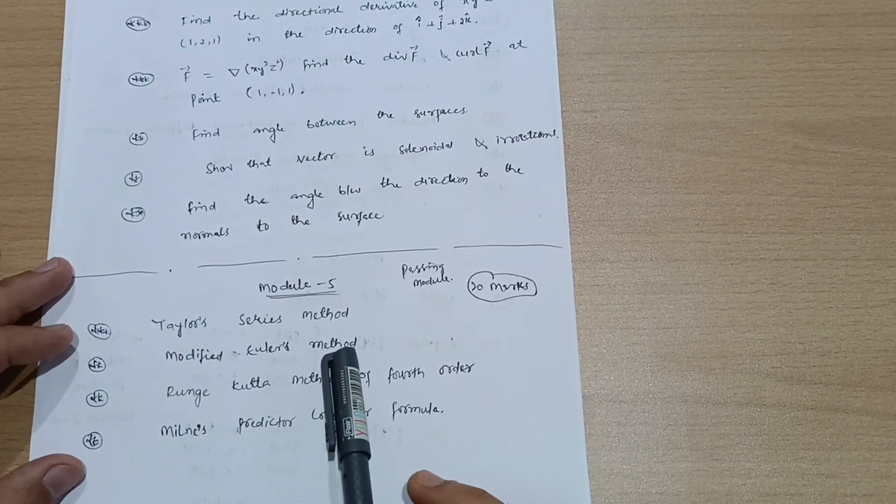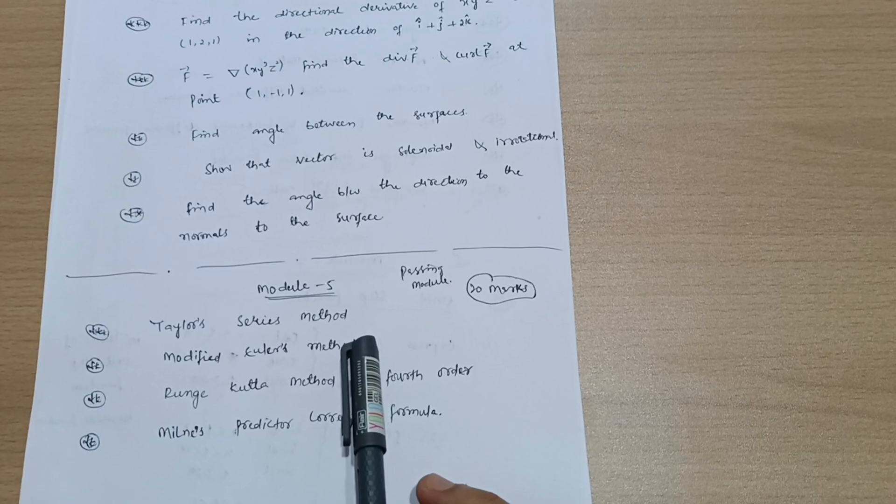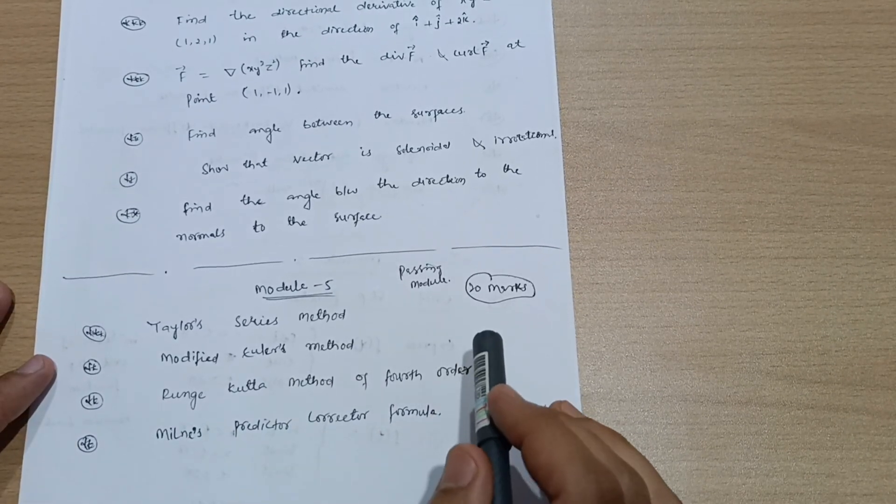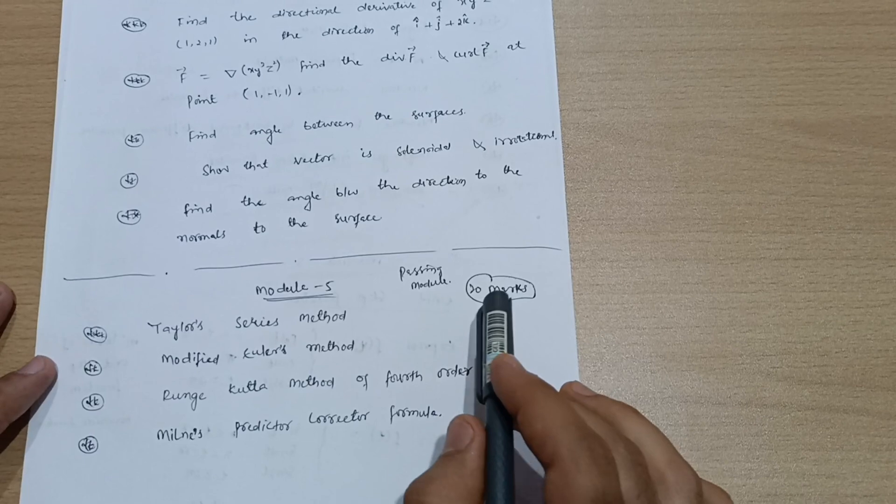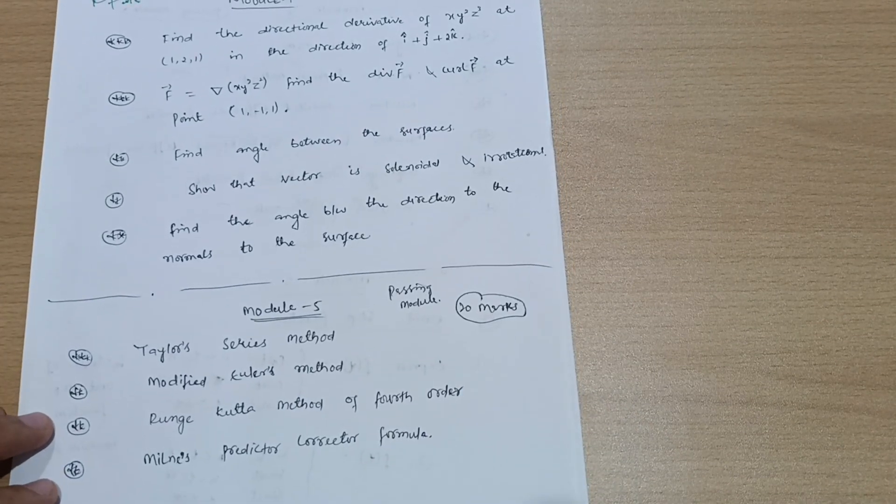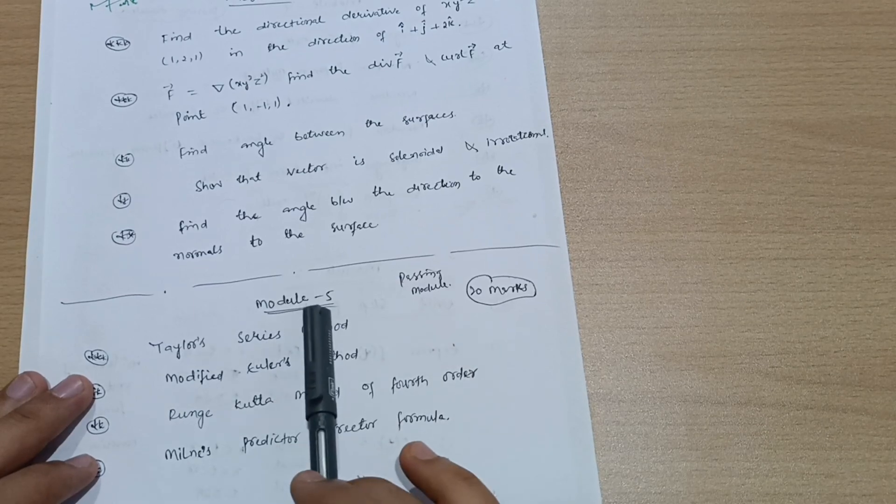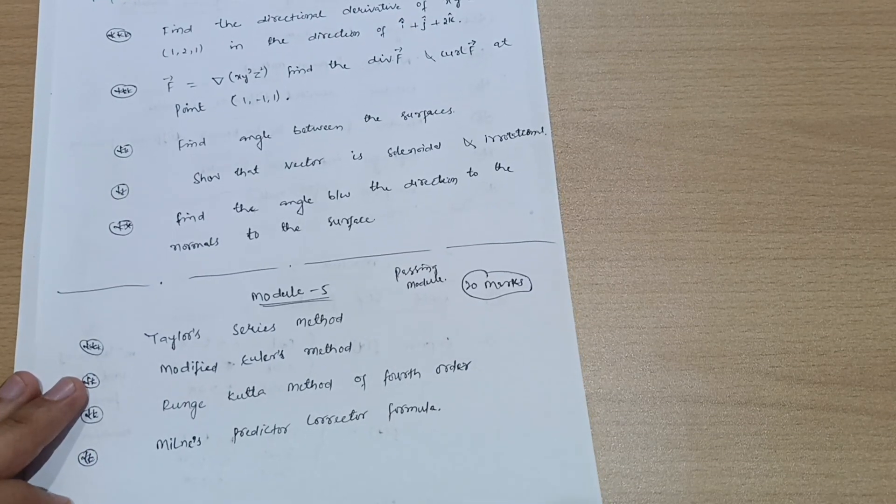Only thing is you should practice all varieties - try at least four or five questions from each so you get some grip on these methods. I'm telling you, you're getting 20 marks with ease if you practice. Compulsorily you should get 20 marks from module fifth as it is the easier one.